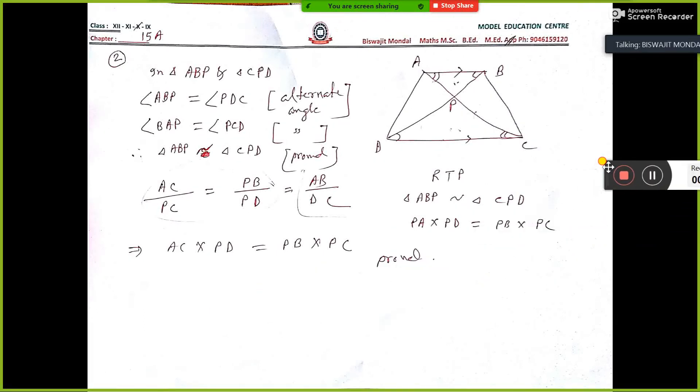Now see, number 2. Question number 2. In a trapezium ABCD, so ABCD is a trapezium, AB parallel to BC and diagonals AC and BD, AC and BD intersect at P.